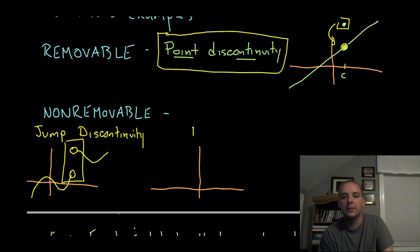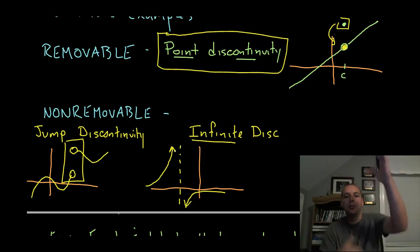And then lastly, we have what's called an infinite discontinuity. And this is a common type that you see a lot with rational functions. These are the types that have asymptotes, where your graph might look something like this. And you can see, due to that asymptote, due to that infinite value that this guy approaches, as you approach c, we would call this type of discontinuity an infinite discontinuity.